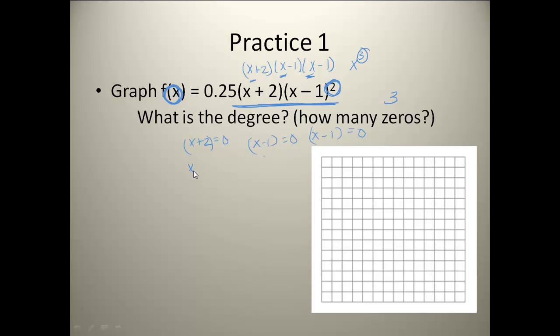Now the reason I wrote the x minus 1 twice is because it's squared. So that means it happened twice. Well, when I solve my first one, I get a zero of negative 2. My second one, I get a zero of 1. And my third one, I get a zero of 1. Now remember, when you get a double zero like this, that means your graph is just going to come down or up, and it's just going to touch that and then bounce back around.